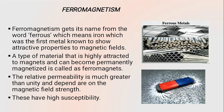For many decades, magnetism has been an anomaly that gained the attention of humanity. Today we shall discuss the concept of ferromagnetism. The word ferromagnetism arises from the word 'ferrous,' which means iron — the first metal known to show attractive properties to a magnetic field. A material that is highly attracted to magnets and can become permanently magnetized is called a ferromagnet, and the phenomenon is called ferromagnetism.